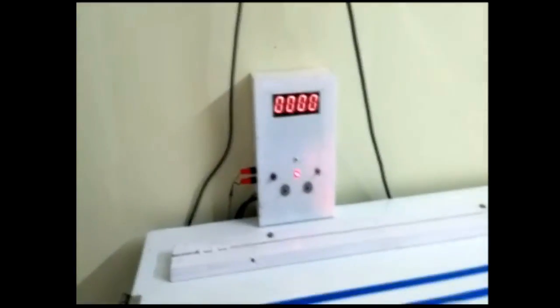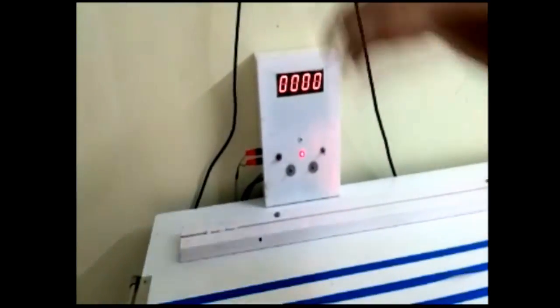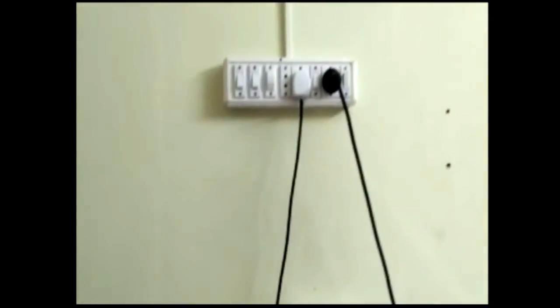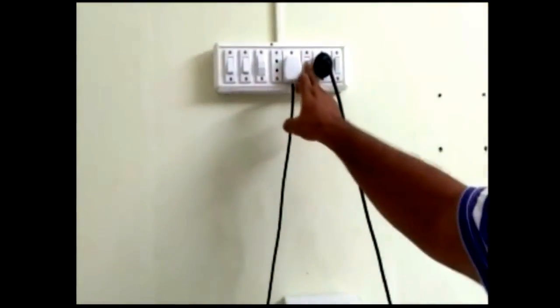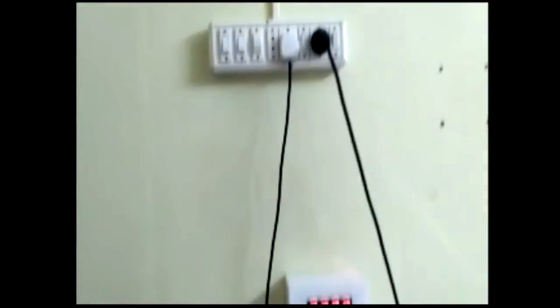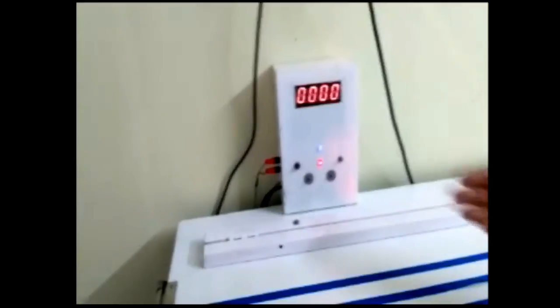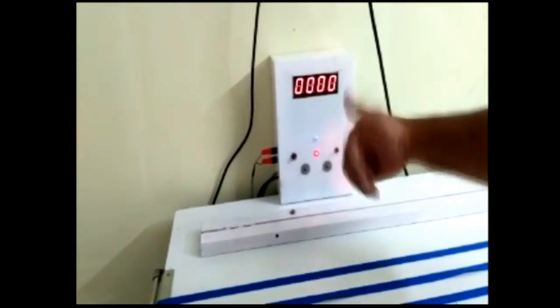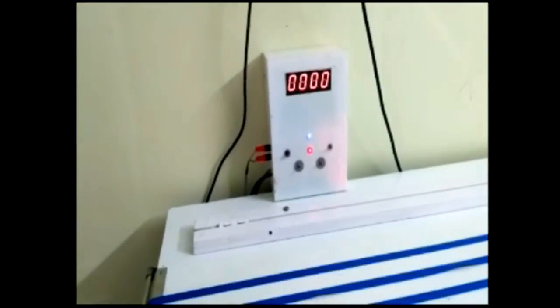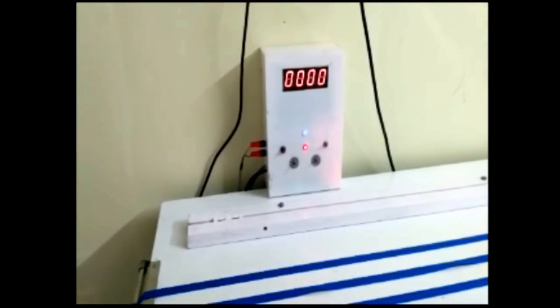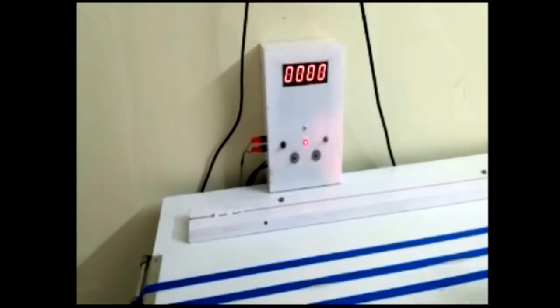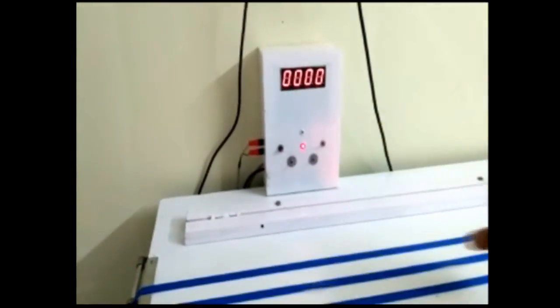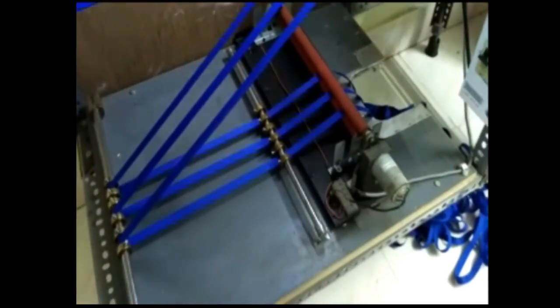There's a reset button. You can reset the count. Once we want to set the ribbon in the roller, I'll just switch it on. Again, the initializing will take place. Now I made this switch up. This is to feed the ribbons. Once the initializing is over, you can guide the ribbon through the rollers and take the ribbon to the ribbon puller.